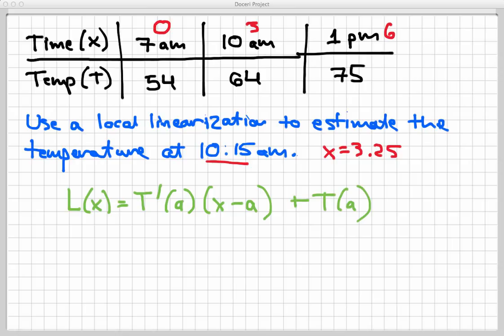Again, this is just the formula for the equation of the tangent line to the graph of, in this case, T at x equals a. So let's first of all interpret what is the a here. I've copied down the formula, and that's a good strategy, but now I have to interpret what all the pieces mean.